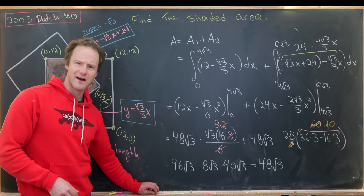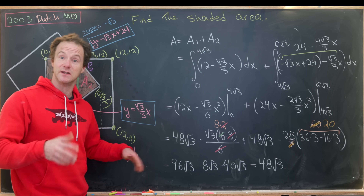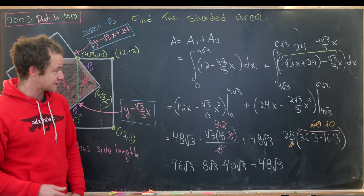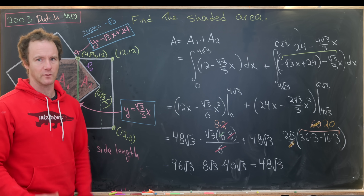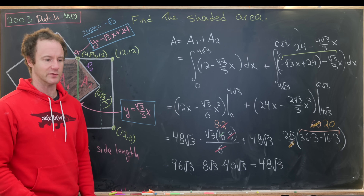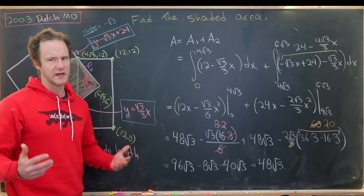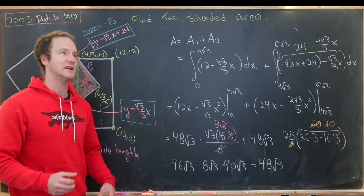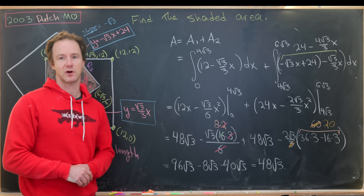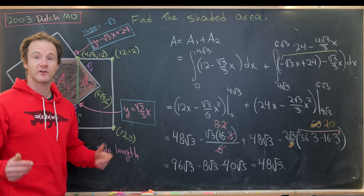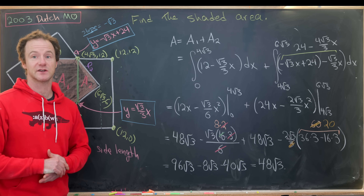So our final answer is 48√3. Tell me how I did — is this the silliest way to do this problem? What's a better way, or can you think of an even more ridiculous approach? Post it in the comments, and that's a good place to stop.